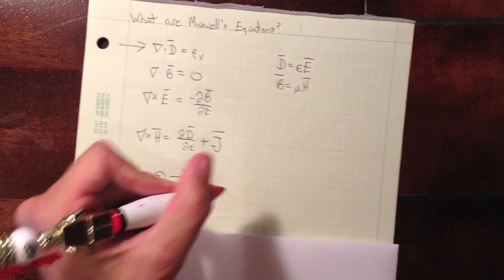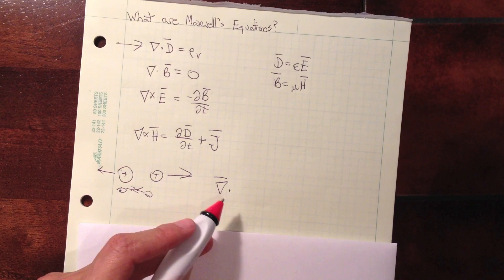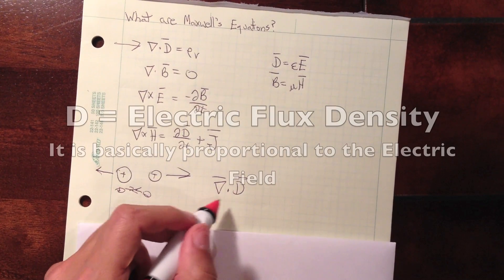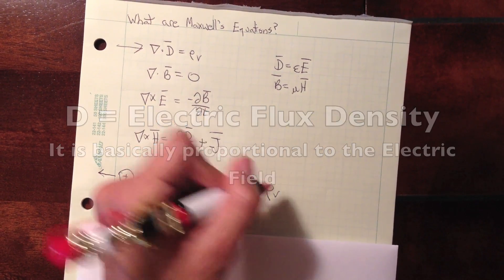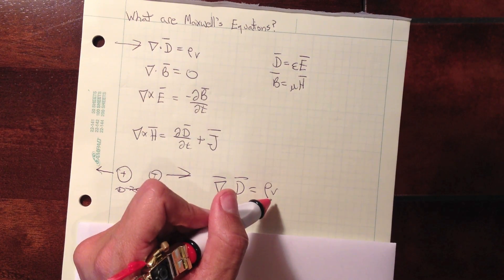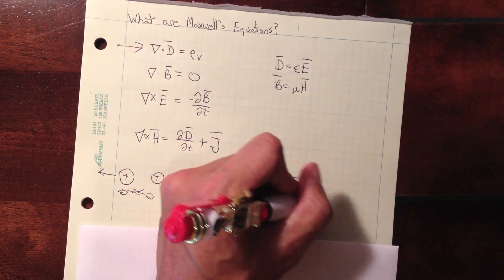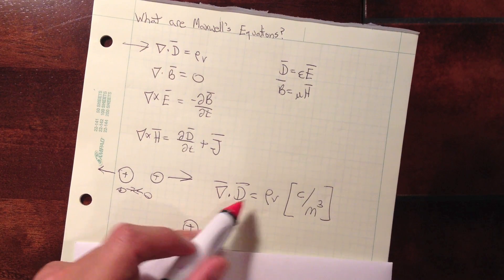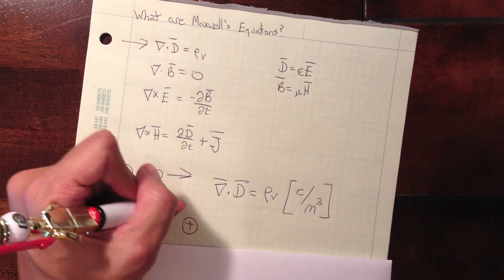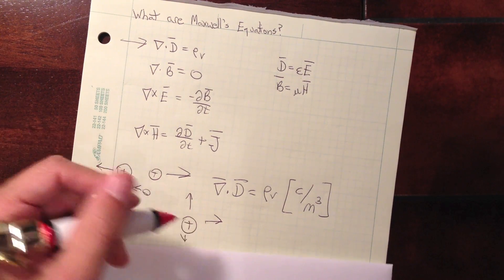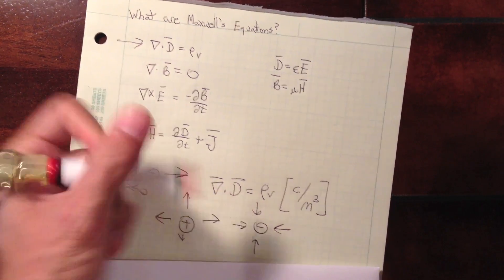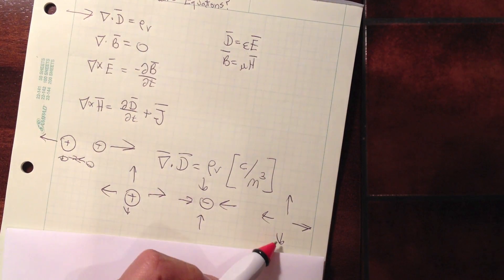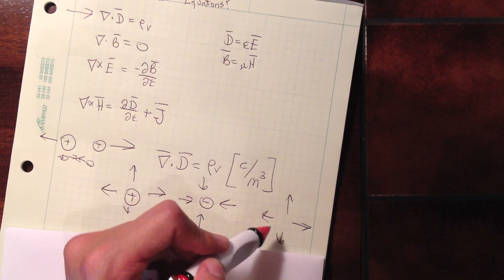What this actually means: this symbol means the divergence — the fields around a point. In this case, D, which is basically equivalent to the electric field, the divergence is equal to the volume charge density. This is how much charge, measured in coulombs, exists over a given volume. If we have a small point charge, this is saying that divergence equals the amount of charge here, so the fields go away from the charge. If the charge was negative, the electric fields must point in. And if there is no charge — if the divergence is zero — we cannot have a field distribution that looks like this. If the electric field goes outward from a point, there has to be a charge there.